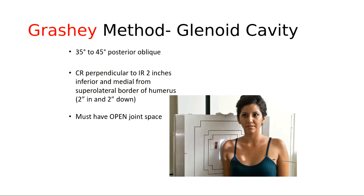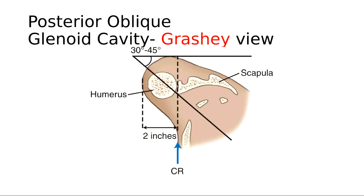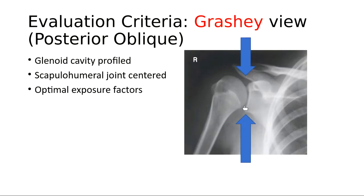The whole point of this view is to open the joint space. The diagram on page 196 shows that coming two inches in from the lateral border ideally places you right in the dead center of the scapulohumeral joint. In theory, the central ray cuts right between the glenoid cavity and the humeral head. With the patient in a 35 to 45 degree oblique and the central ray perpendicular to that open joint space, you end up with a perfectly open space between the humeral head and the glenoid cavity.